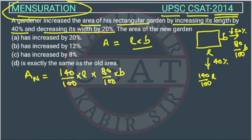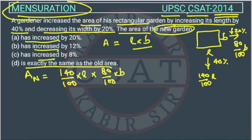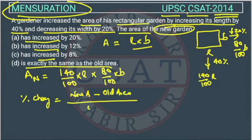Now the question is asking, the area of the new garden has increased, what is the percent increase? So how we will calculate this? The formula of percentage change is equal to new area minus old area upon old area. So this is the formula.